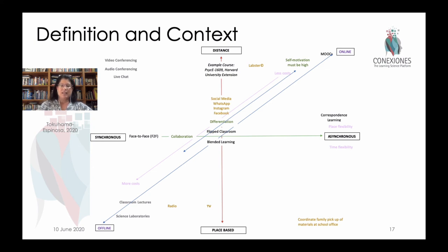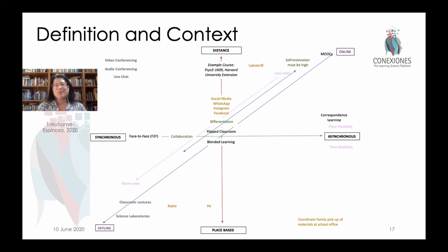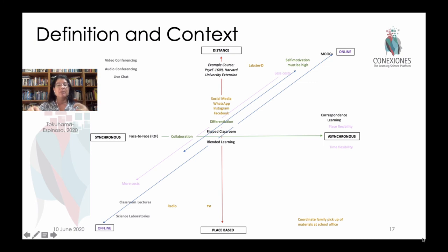We have things that are in synchronous time — we do them at the same time, like our typical classrooms in school. Then we have asynchronous things, like when we send homework. On another scale, we have distance or remote learning versus place-based learning, where we are in physical spaces together. And along another intersection, we have offline to online. You can have synchronous things online or offline, and you can have asynchronous meetings online or offline. This contextualizes asynchronous as being out of sync with the timing of learners — teachers and learners don't have to meet at the same time for learning to occur.